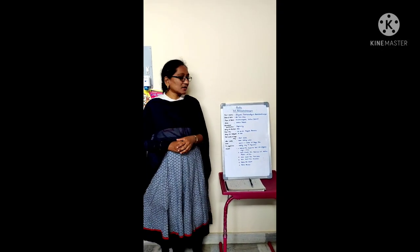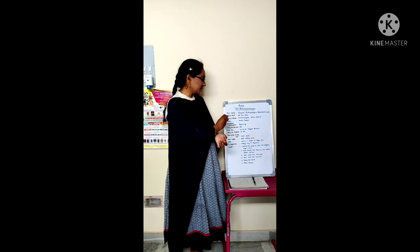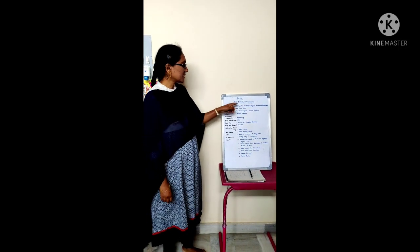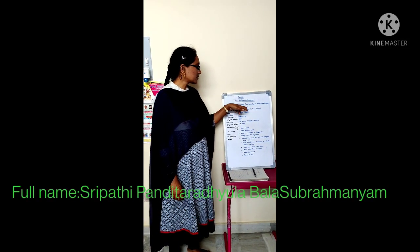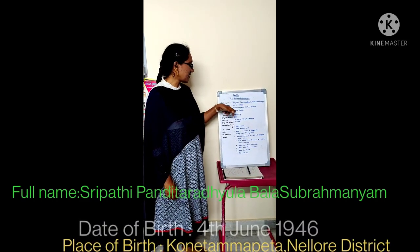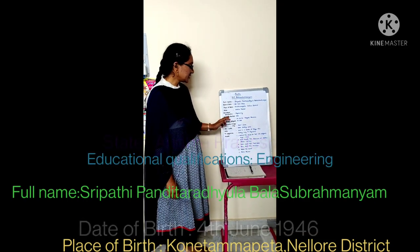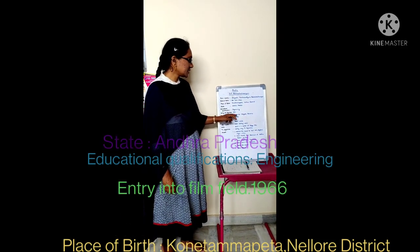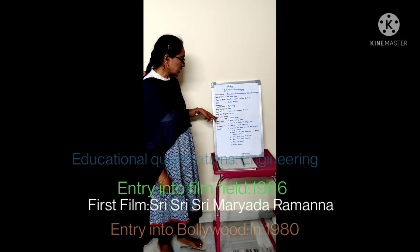Once we read it, we know about the profile. Full name: Sripathi Panditarajula Balasubramanyam. Date of birth: 4th June 1946. Place of birth: Koritamma Peta, Nellore District, Andhra Pradesh. Educational qualifications: Engineering. Entry into film field: 1966. First film: Shri Shri Shri Maryada Ramanna. Entry into Bollywood: 1980.